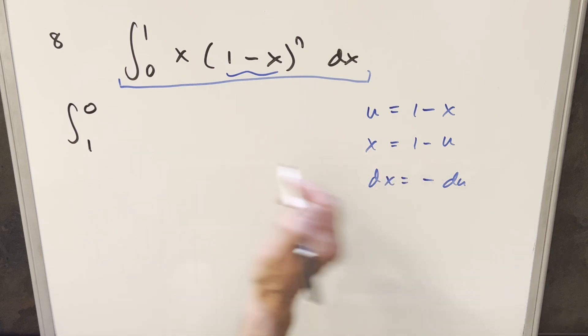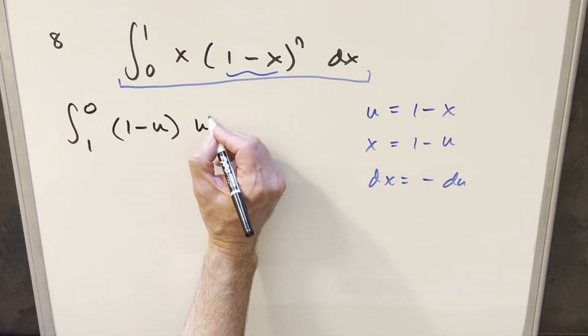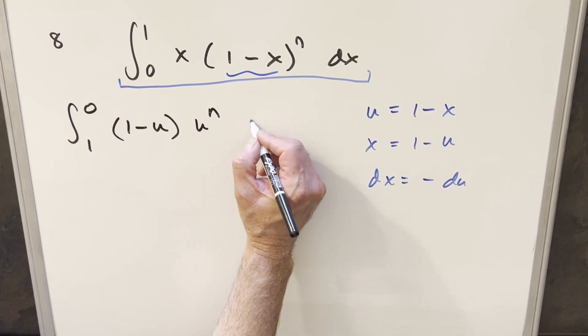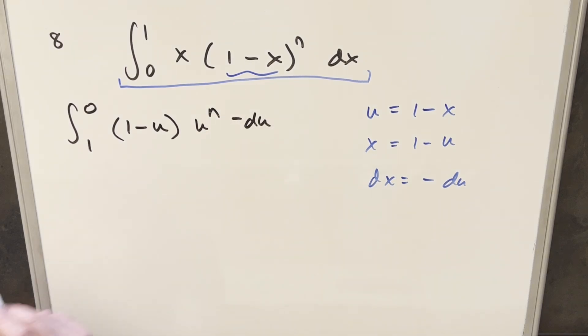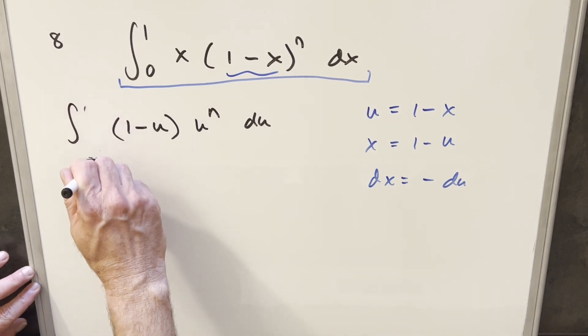For the x value, this becomes 1 minus u here, and then this part here is just going to become u to the n du, or actually minus du. But then with the minus sign, I can use that and take it over here and use it to flip the bounds.